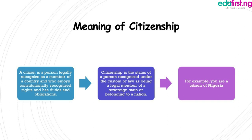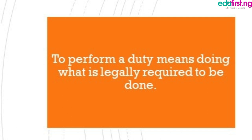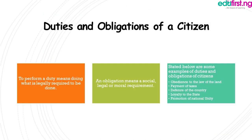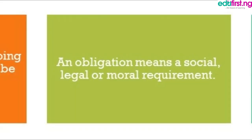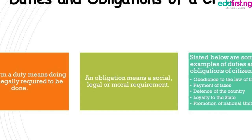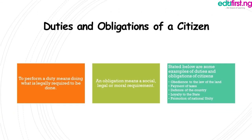Duties and Obligations of Citizens. As a citizen of a state, you have duties and obligations. First, we're going to discuss what duty is and what obligation is. To perform a duty means doing what is legally required to be done. For instance, a citizen is required to obey law and authority in a state. An obligation means a social, legal or moral requirement. For example, it is an obligation to help the police arrest criminals or give information to detect criminals. So there is a difference between duties and obligation.